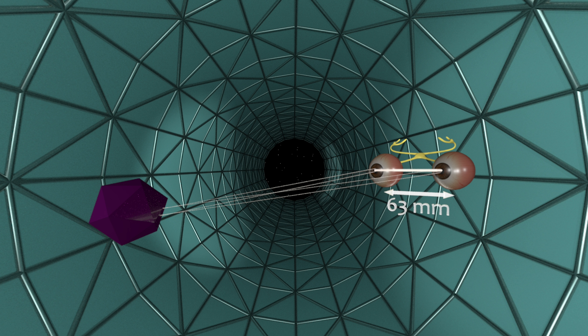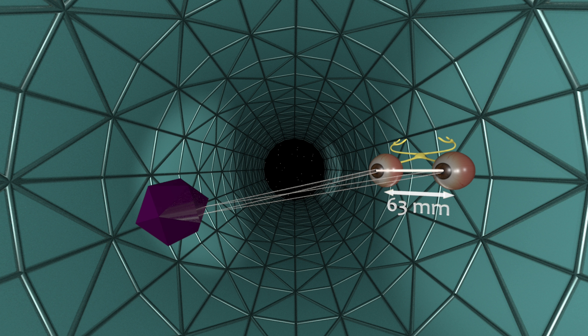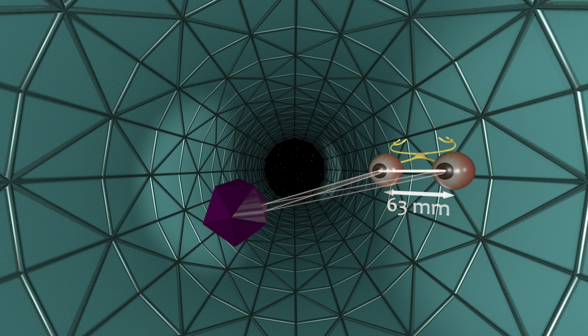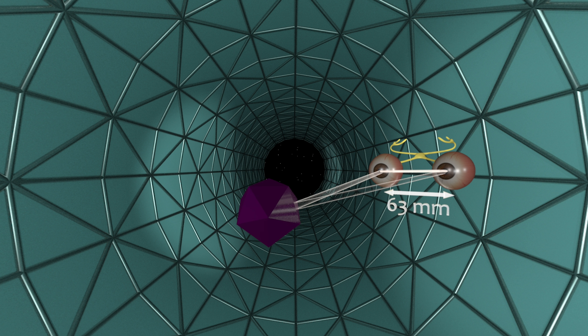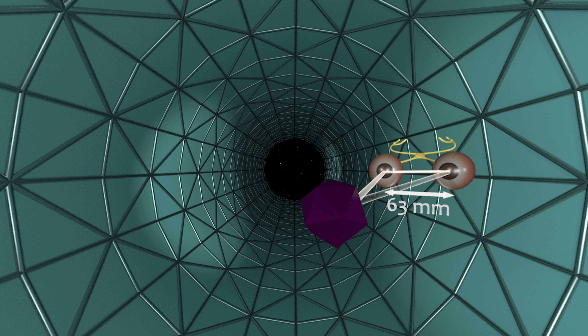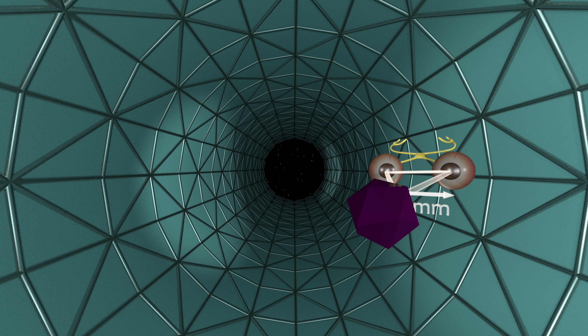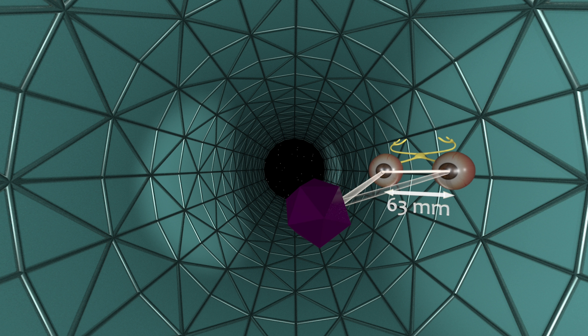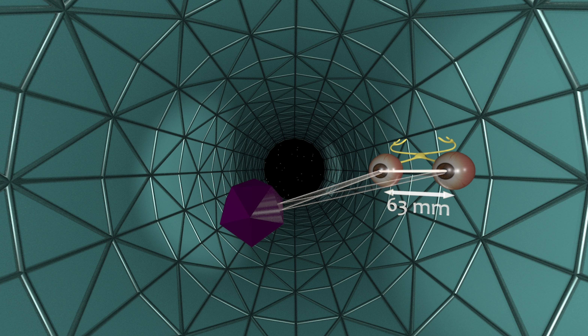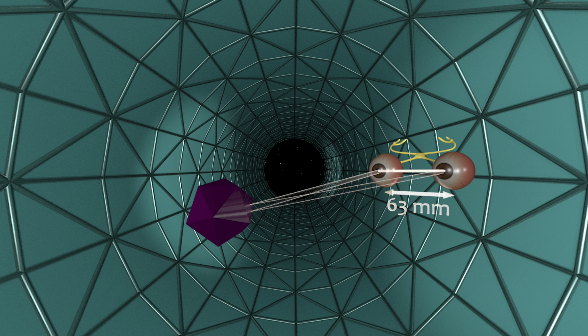The distance between the pupils is on average 63 millimeters. This gives us one side of the triangle. Instinctively, our brain senses the angles at which our eyes are pointing. If we knew the angles exactly, we could compute the distances between our eyes and the object. After years of experience, our brains are able to make a very good approximation of distances of nearby objects. Thanks, brain.